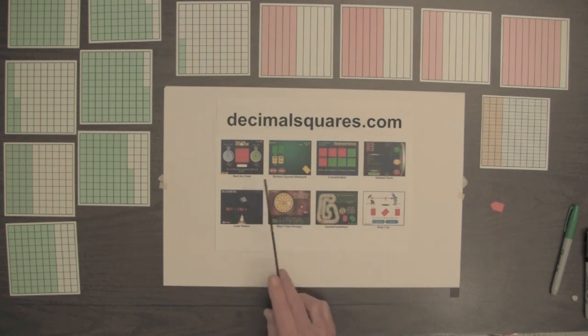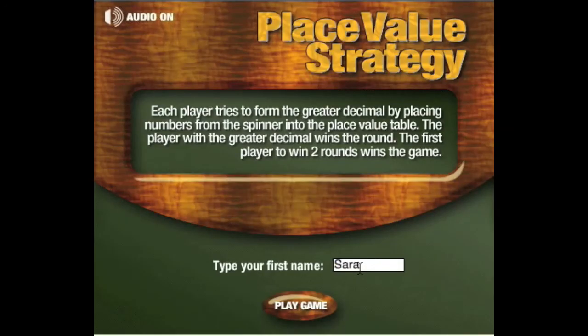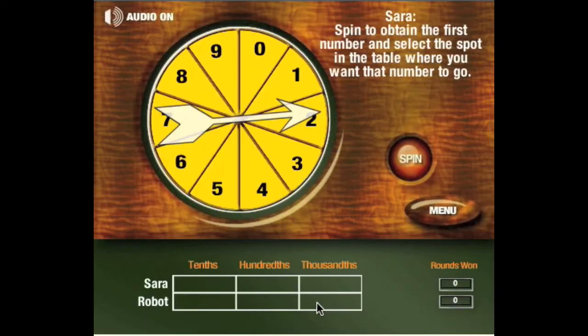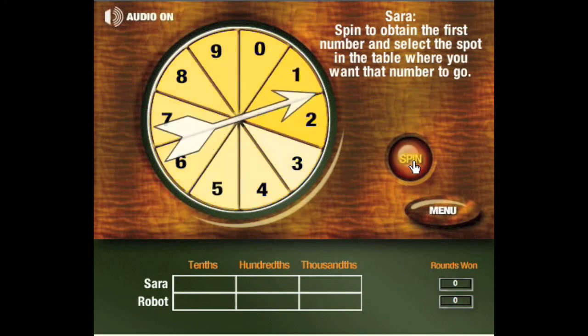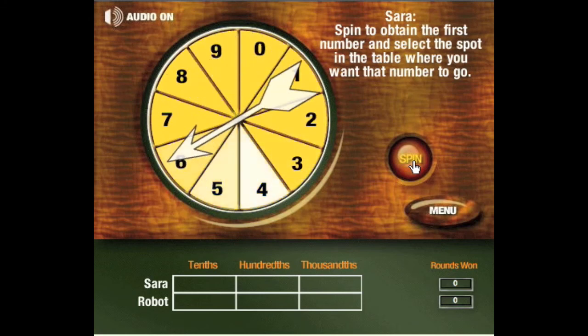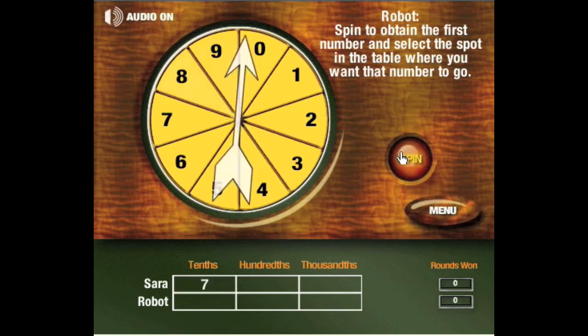Decimalsquares.com has eight interactive games. We played Beat the Clock at the end of video number one. And now we're going to play the game Place Value Strategy. Sarah will type her name and click Play Game. Sarah spins first, obtains the number seven, and places it in the first spot of the table, the tenth spot.